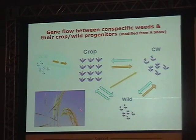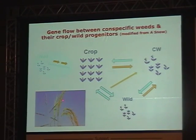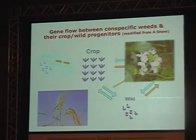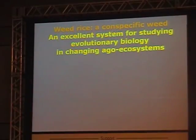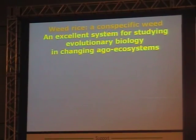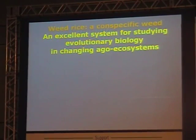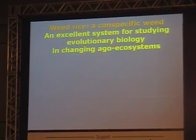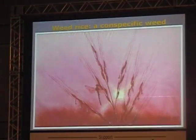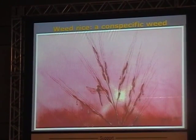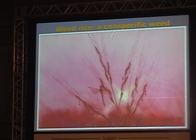This is a picture of rice and wild rice. You will always find some weedy type in the boundary area and also in the field, and this can produce new weeds. I'd like to use weedy rice as an example, because weedy rice is an excellent material for studying evolutionary biology, especially for understanding adaptive evolution in changing agricultural ecosystems. This painting shows how weedy rice looks.